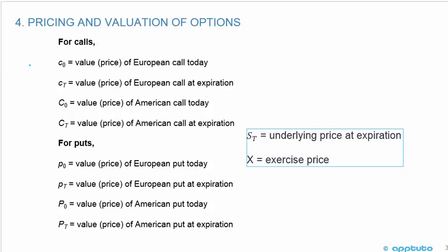This slide covers the nomenclature used throughout the next few learning outcome statements. For calls, C₀ (small c naught) is the value or price of the European call today. Cₜ is the value of the European call at expiration. C₀ (big C naught) is the value of an American call today, and big Cₜ is the value of an American call at expiration. European options use small c and American options use big C.